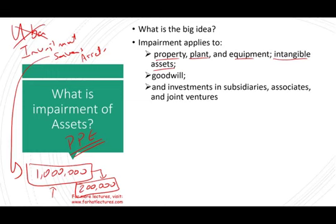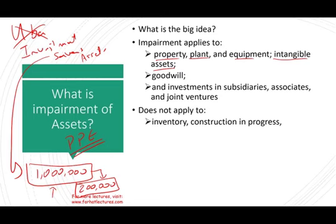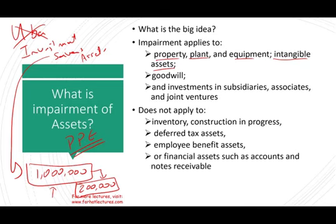Impairment does not apply to inventory or construction in progress, deferred tax assets — we have a different valuation for those — employee benefit assets, or financial assets such as accounts or notes receivable. Those are not subject to impairment; they're subject to something else, which is allowance and valuation accounts.